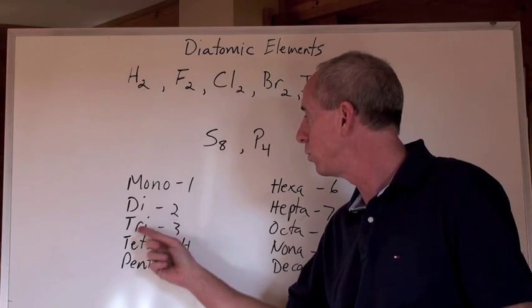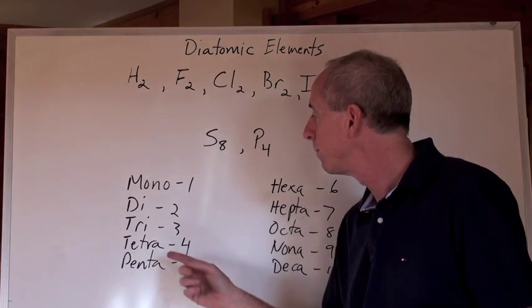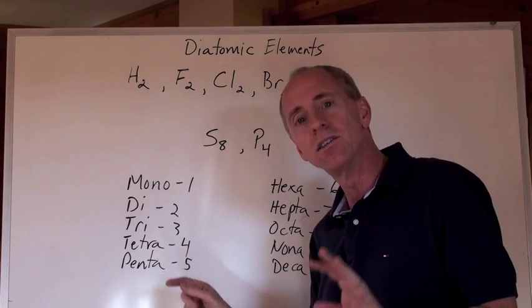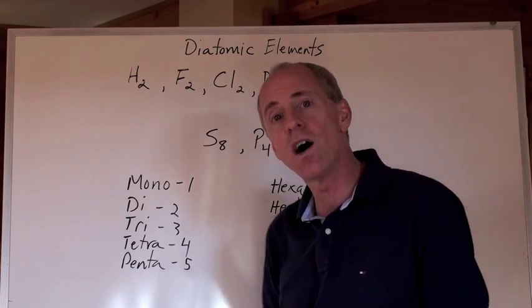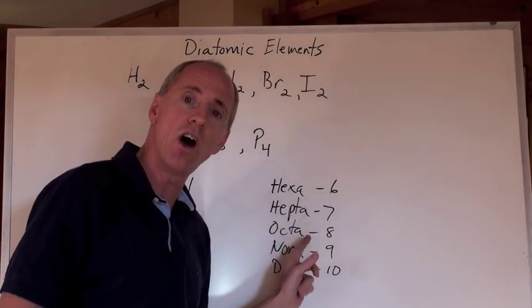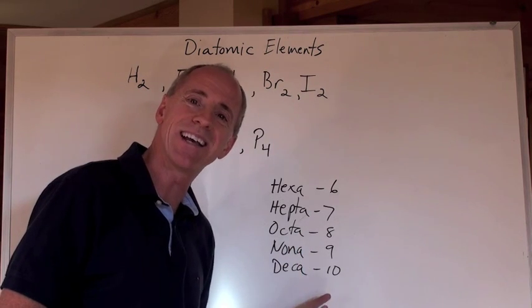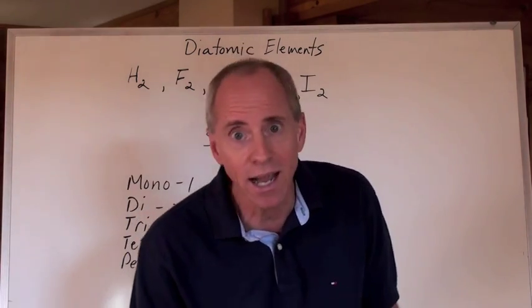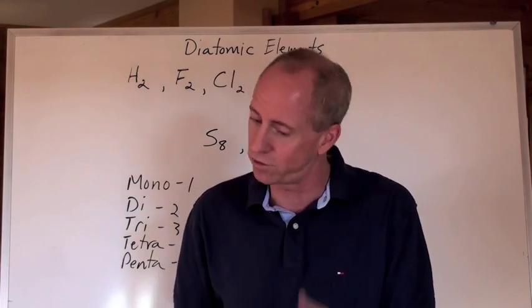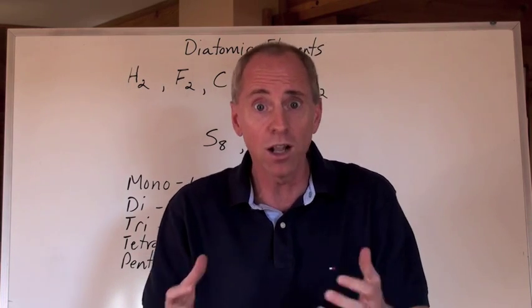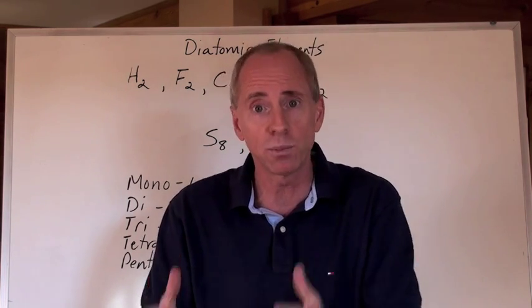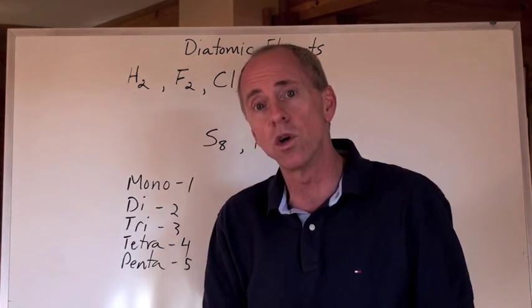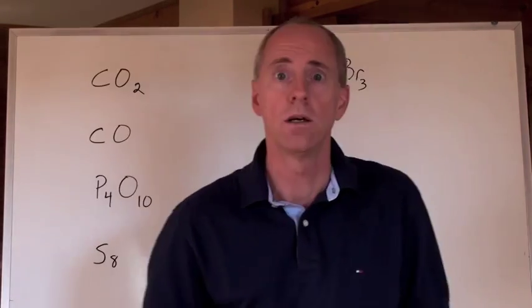Mono is 1, di is 2, tri is 3. Those are pretty obvious and pretty easy to remember. 4 is tetra. A lot of people say quad and stuff like that. No, no, no. Tetra is 4, and then penta is 5, hexa is 6, hepta 7, octa 8, nana 9, and deca is 10. Mono, di, tri, and then tetra, penta, hexa, hepta, octa, nana, deca. You've got to get that totally under control. It's something to commit to memory. You've got a periodic table to look things up, but you do have to have some of these things under control to be able to do compounds.